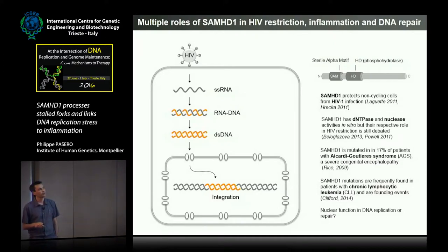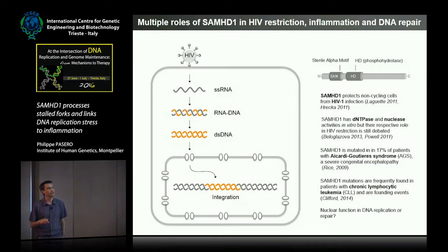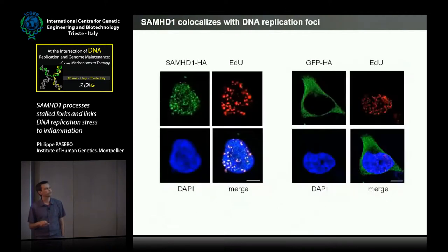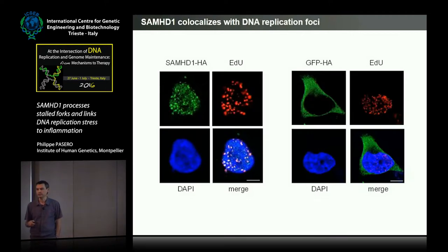We first started working on this protein because of its dNTPase activity, obviously because dNTPases are very important for DNA replication, but we found eventually that it's doing much more than regulating dNTP pools. We first looked at the localization, and we found that SAMHD1 co-localizes with EDU incorporation foci, suggesting that it might be doing something within replication forks.